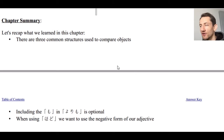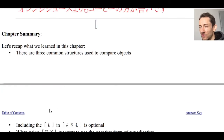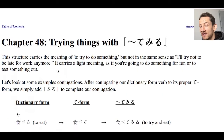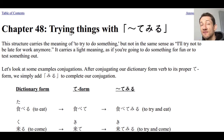To recap quickly: there are three common structures used to compare objects — yori, hodo, and no hoga. The mo in yori mo is optional. When using hodo, we use the negative form of the adjective — he is not as tall as her, she is not as old as me. Next week we'll look at chapter 48 and how to use te miru to express trying things — yonde miru for giving a book a read, mite miru for watching a movie. It's a very casual but useful everyday expression, so be sure to check that out.